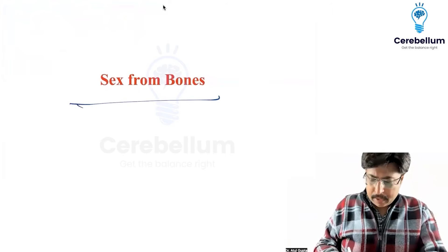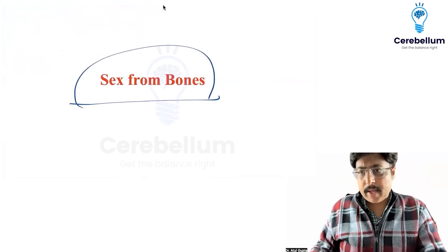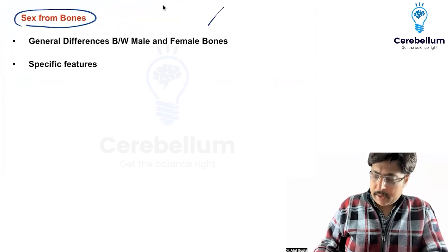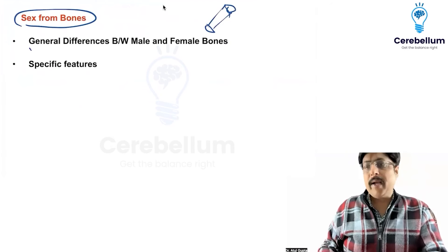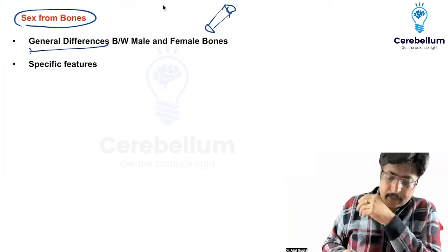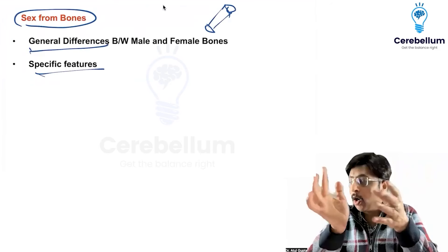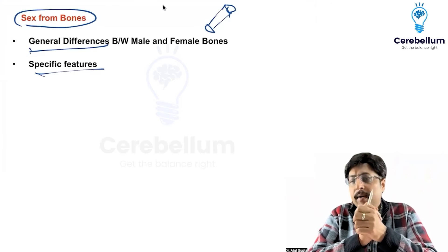Let us discuss sex estimation from various bones. Suppose any bone is given, like femur or humerus — how do you identify whether it is male or female? One approach is the general difference between male and female bones, and then there are specific features of each bone. A lot of questions you can solve just by the general differences.